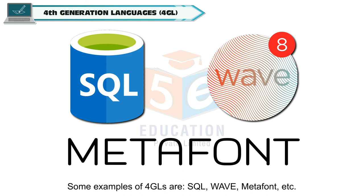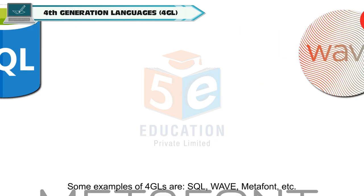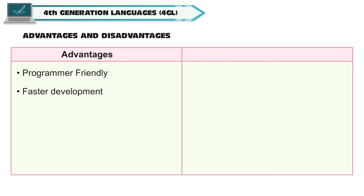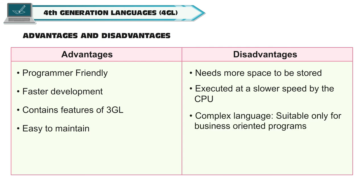Some examples of 4GLs are SQL, WAVE, MetaFont, etc. Advantages of 4th generation languages are: programmer-friendly, faster development, and contains features of 3GL and easy to maintain. Disadvantages are: needs more space to be stored, executed at a slower speed by the CPU, complex language, and suitable only for business-oriented programs.